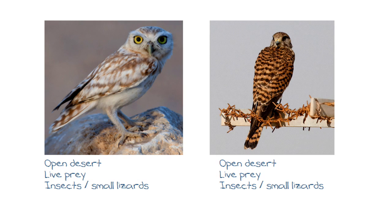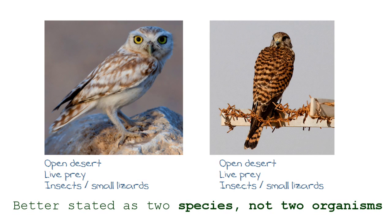Looking at this, it appears that they share the same way of life. But we know the owl is nocturnal — it feeds at night — while the kestrel is diurnal, feeding during the day. They are separated by time, reducing competition that they could have. This supports Gause's competitive exclusion principle, which states no two organisms can occupy the same niche at the same time.